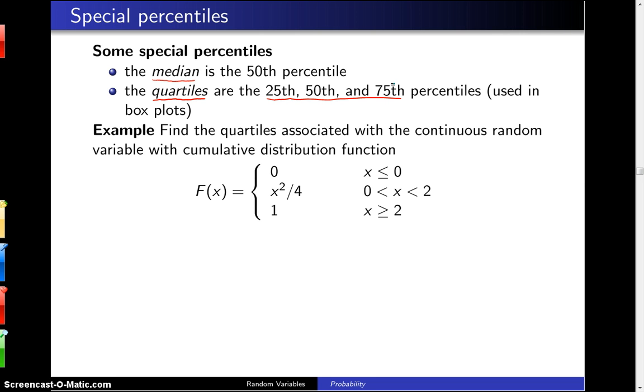So here's an example. Find the quartiles associated with the continuous random variable with cumulative distribution function F(x) equals 0 for x less than or equal to 0, x squared over 4 for x values between 0 and 2, and 1 for x greater than or equal to 2. You'll probably recognize this as the same cumulative distribution as from the previous example.